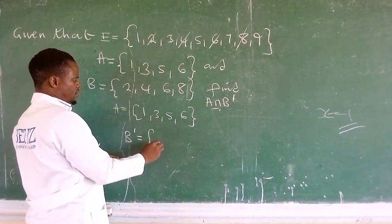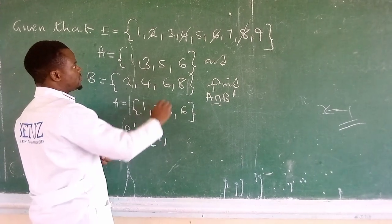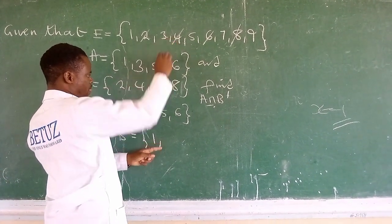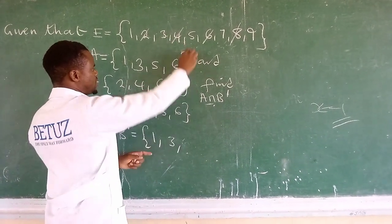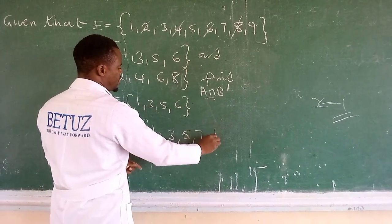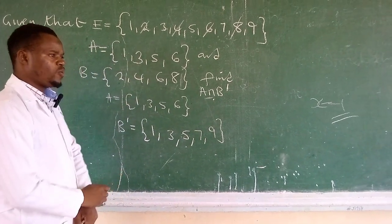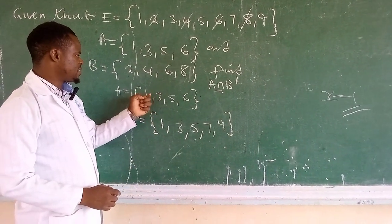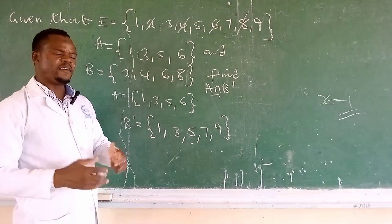So now let's look at the list: 1, then we have 3, then we have 5, 7, and 9. Those are the elements that are not there in set B.